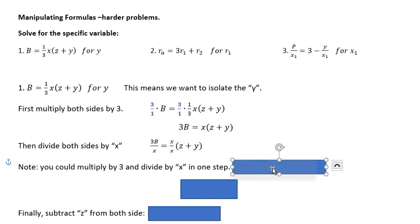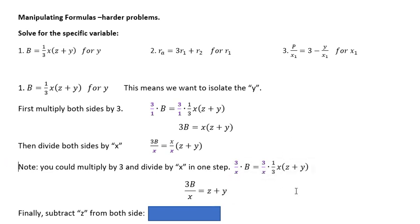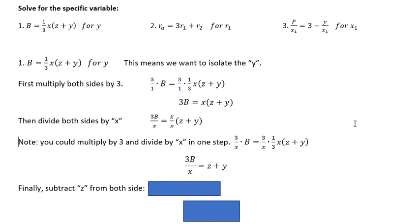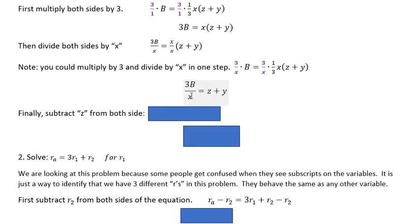And then I also want you to notice that I could have, in one step, multiplied by 3 over X. And if I had done that, you can see I would get 3B over X, which is what I'm getting here. And over here, you can see that the threes would cancel and those X's would cancel. So it's okay to do that in one step. I did it in two because it's a little less confusing for people. And then you can see that I end up with 3B over X equals Z plus Y.